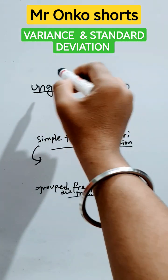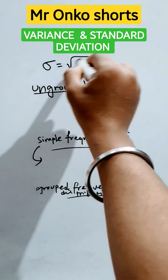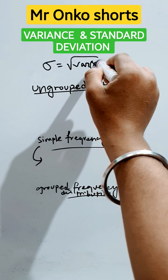First of all, we know that standard deviation is equal to the square root of variance of x, the variable.